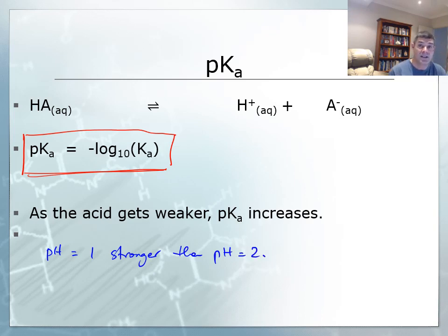And this scale works the same for the pKa. So a pKa value which is small or low is going to be stronger than a high pKa. The alternative to that is as the acid gets weaker, the pKa increases.